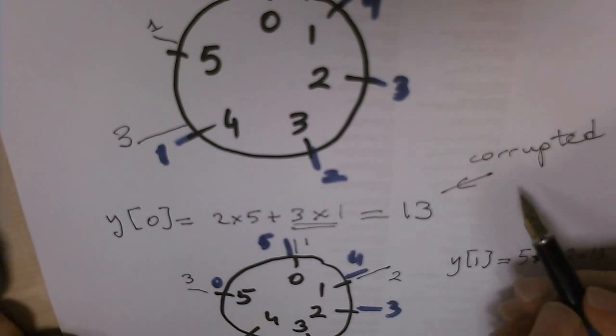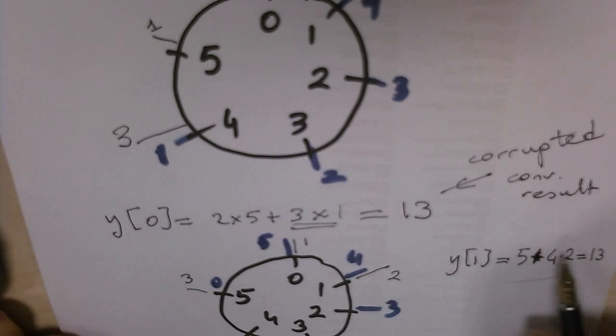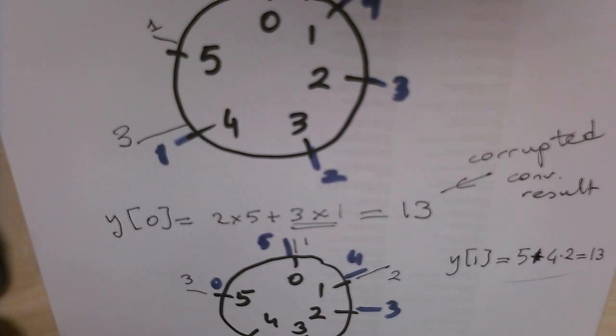Corrupted convolution result. But this is fine, this is the same as regular convolution. So you keep turning around this circle and you determine your circular convolution. Obviously it will be periodic because you are turning around the circle.